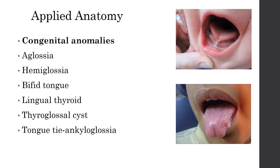Coming to applied anatomy of tongue, there are many congenital anomalies of tongue. Aglossia is absent tongue, or hemiglossia is absence of half of the tongue. Sometimes the tongue may be bifid, as in this figure, and it is called a bifid tongue. Such a bifid tongue may not always obstruct the function of the tongue.